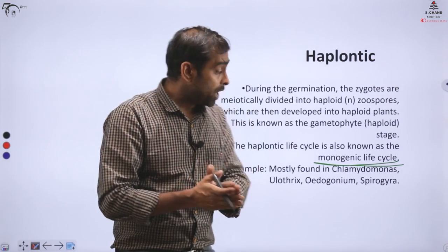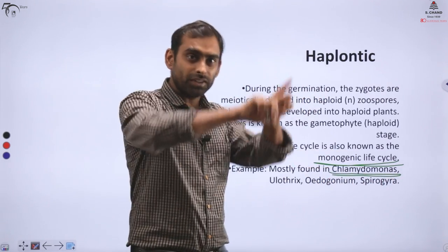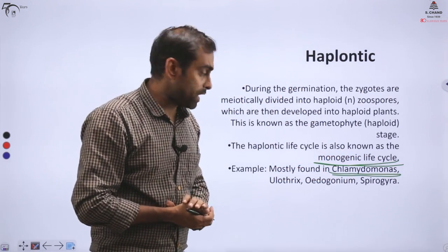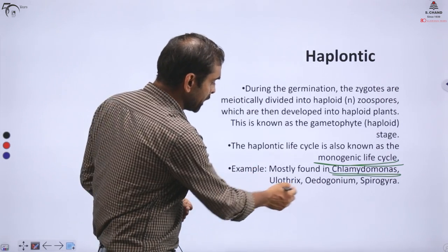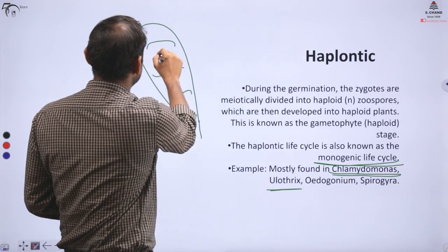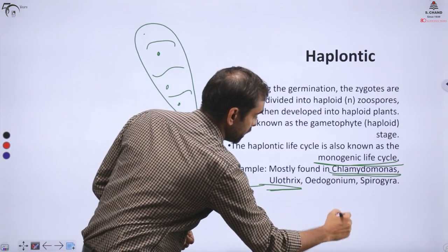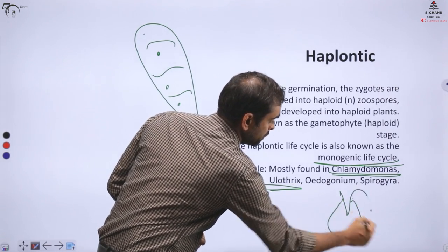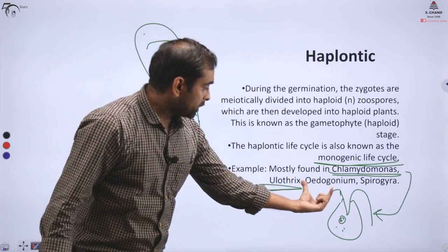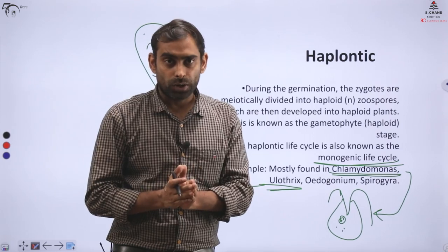If we talk about algae examples, I hope you remember from the last video, we studied Chlamydomonas life cycle. Chlamydomonas, that two-flagella containing algae, has a haplontic life cycle. Apart from that, an algae which appears like this also contains haplontic life cycle, called Ulothrix. And this was the type of algae we called Chlamydomonas. Other than that, Oedogonium, Spirogyra - these algae's life cycles are also haplontic.